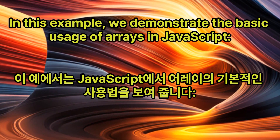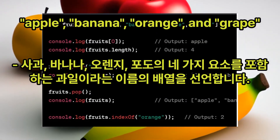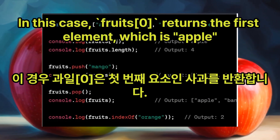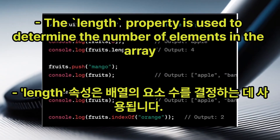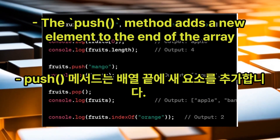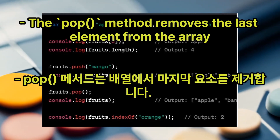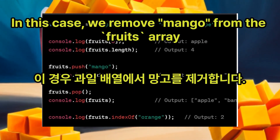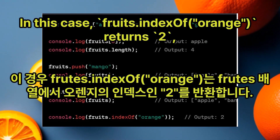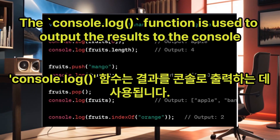In this example, we demonstrate the basic usage of arrays in JavaScript. We declare an array named fruits containing 4 elements: apple, banana, orange, and grape. Using square brackets and the index, we can access individual elements. fruits[0] returns the first element, which is 'apple'. The length property returns the number of elements; fruits.length returns 4. The push method adds a new element to the end of the array; we add 'mango'. The pop method removes the last element; we remove 'mango'. The indexOf method returns the index of a specified element; fruits.indexOf('orange') returns 2. The console.log function is used to output the results to the console.